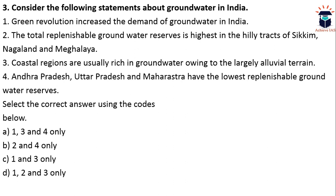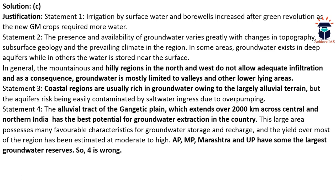The Green Revolution increased the demand for groundwater in India, as irrigation by surface water and bore wells increased; new GM crops required more water. Coastal regions are usually rich in groundwater owing to the largely alluvial terrain. The presence and availability of groundwater varies greatly with topography, subsurface geology, and prevailing climate. In mountainous and hilly regions in the north and west, adequate infiltration is not possible and water is mostly limited to valleys. Coastal aquifers risk being contaminated by saltwater ingress due to over-pumping.